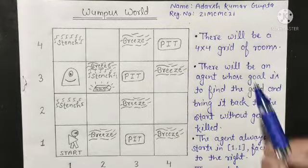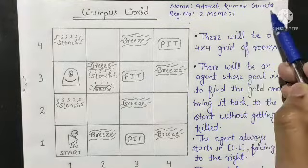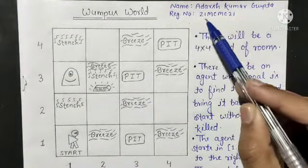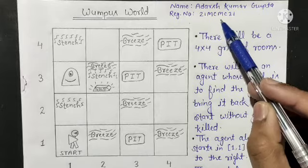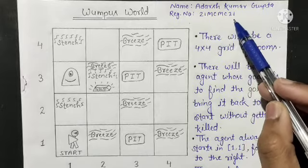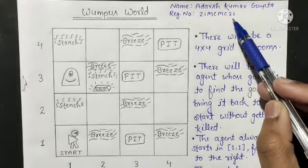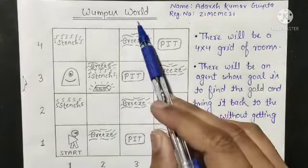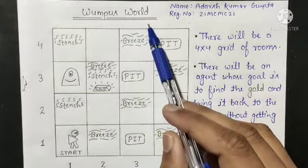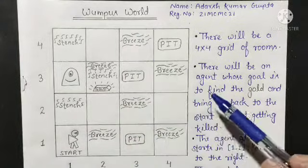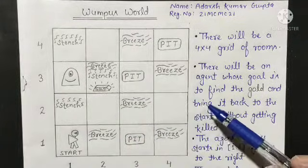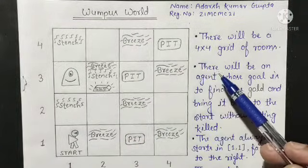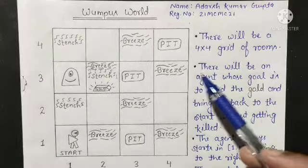Good morning sir. My name is Adarsh Kumar Gupta and my registration number is 21MC MC21. In this video I am going to talk about the Wumpus World problem. First of all we will understand the Wumpus World problem's rules, description and everything.